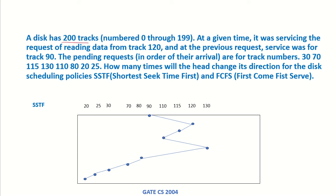A disk has 200 tracks numbered 0 through 199. At a given time, it was servicing the request of reading data from track 120, and at the previous request, service was for track 90.